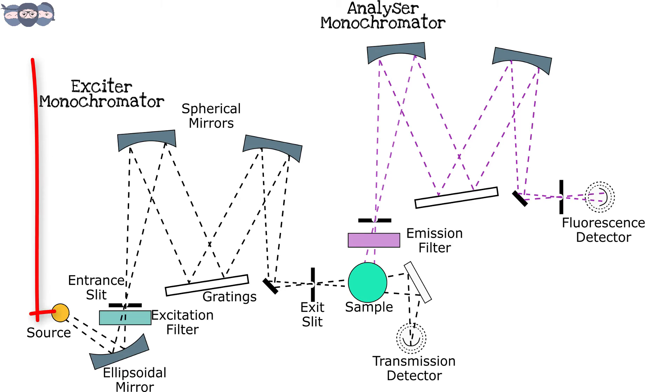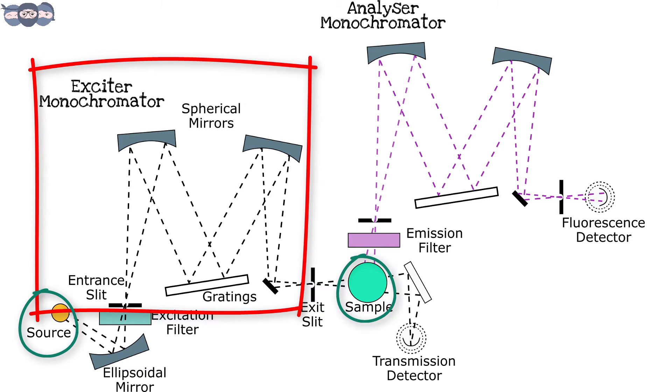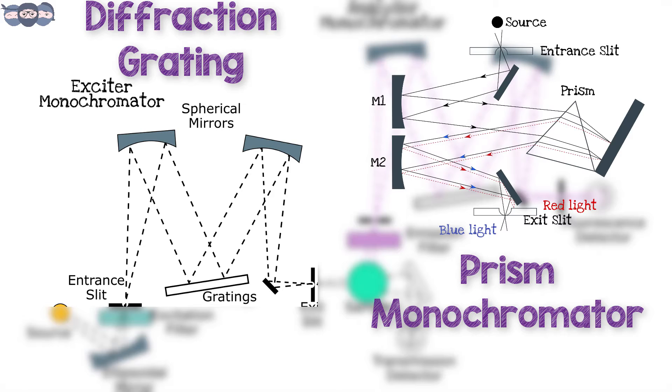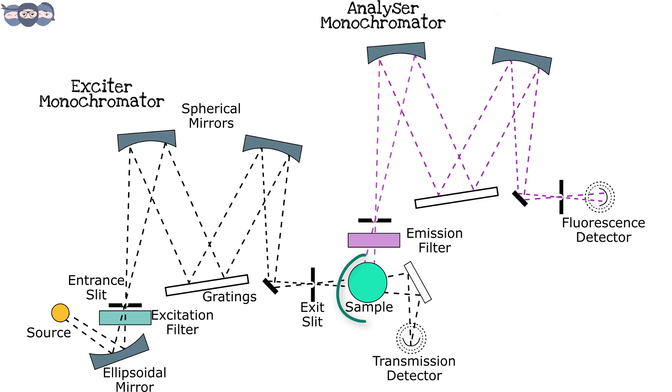The next component in the spectrofluorimeter is the exciter monochromator. This monochromator is placed between the light source and the cuvette which holds the sample. The exciter monochromator can be a prism monochromator or a diffraction grating. The sample under test is placed in the sample holder.